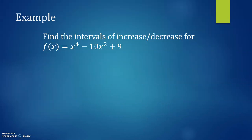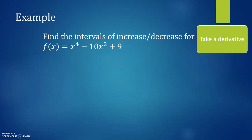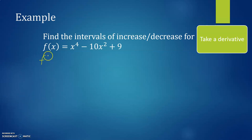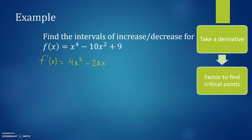Here is a quartic function, and we need to find the intervals of increase or decrease. Step one: we're going to take a derivative. A lot of the step ones in this chapter are 'take a derivative,' so let's go ahead and do that. We get 4x³ minus 20x. Next, we're going to want to factor so we can find our critical points. I'm going to factor a 4x out of each term.